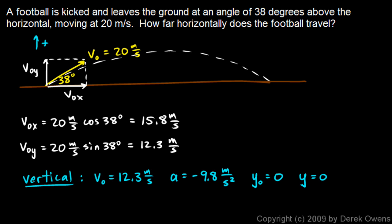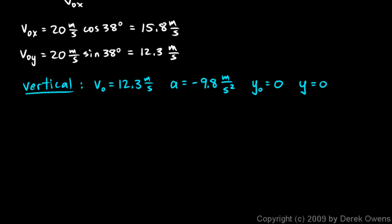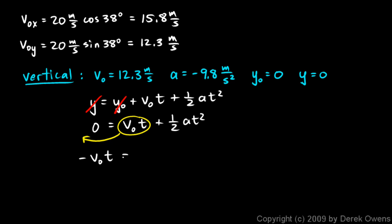So I'll use this equation. I'm going to say y is y0 plus v0t plus 1 half at squared. And both of those are 0. So I can write 0 is 0 plus v0t plus 1 half at squared. Now I'm trying to find t. I'm going to take this term and move it over to that side, and it becomes negative. So I get negative v0t equals 1 half at squared.